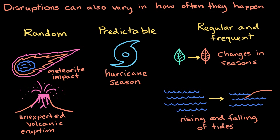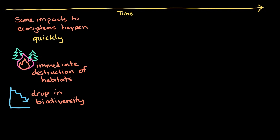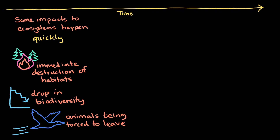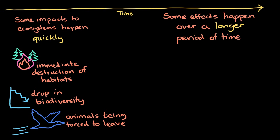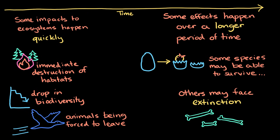Even though they happen regularly, seasons and tides are considered disruptions because they can still cause predictable changes in the environment that organisms have to adjust to. Now, let's think about how disruptions can affect ecosystems. Some impacts happen quickly — this could include the immediate destruction of habitats, a drop in biodiversity, or animals being forced to leave an area. But some effects happen over a longer period of time. Depending on how severe or intense a disruption is, some species may be able to survive while others may face extinction. One way to understand these effects is by looking at how a disruption changes the flow of energy in a food web.